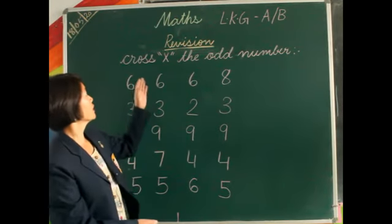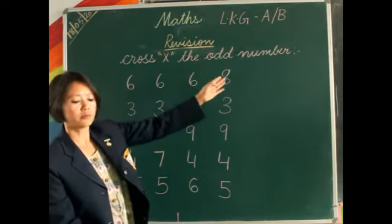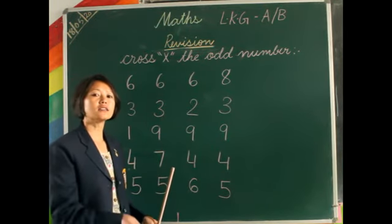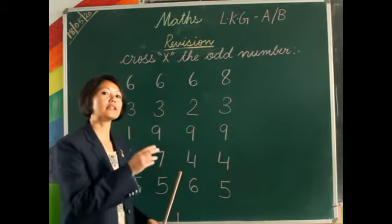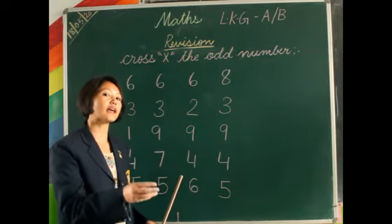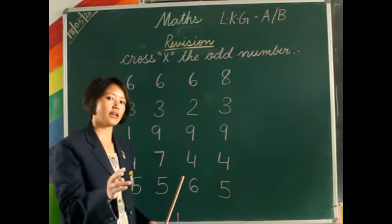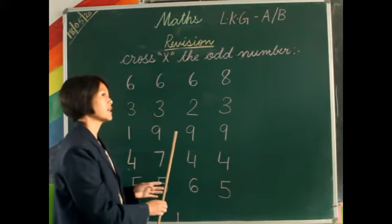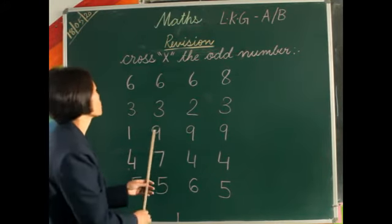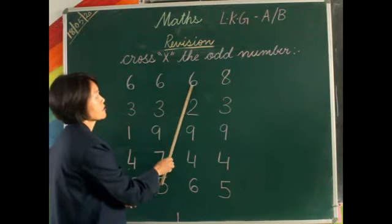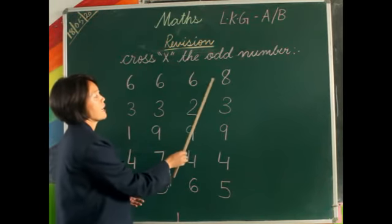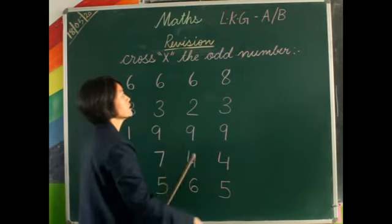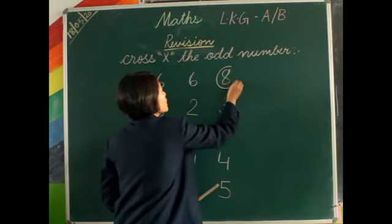Now children will cross the odd number. Here you have to cross the odd number. In the previous class we circled the same number — like 4 and 4, 5 and 5, 6 and 6, and so on. Now here you have to cross the odd number. So: 6, 6, 6, and 6 are the same number, and 8 — here 8 is the odd number, so we cross the odd number.